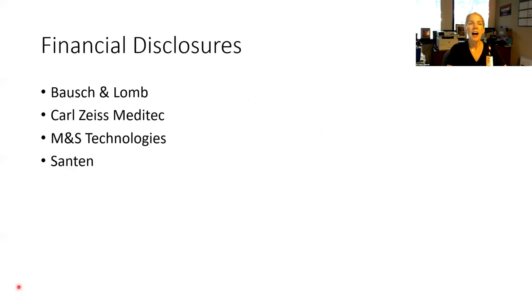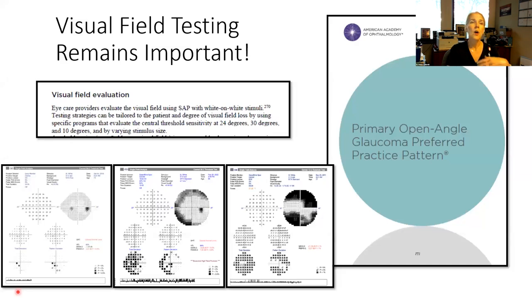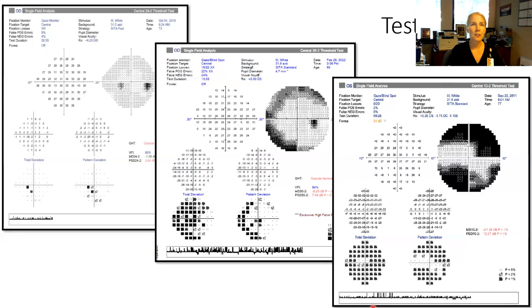Thank you very much for having me. It's really a pleasure to be here today. A friend of mine recently said we live in an OCT world — and not to steal Dr. Pazos' thunder — I'm just going to say that visual field remains a critically important test in the evaluation of glaucoma patients and glaucoma suspects, both on the diagnostic end and throughout the glaucoma continuum. This is just one excerpt from the American Academy of Ophthalmology's Preferred Practice Patterns stating that visual field evaluation is critical whether you're testing 24 degrees, 30 degrees, or 10 degrees using white-on-white perimetry. So I don't think we're going to be getting away from visual fields anytime soon.